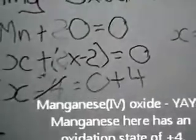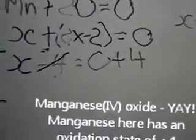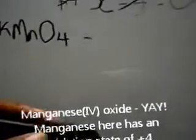X is equal to plus four, hence the name manganese four oxide. Now we're gonna try KMnO4.